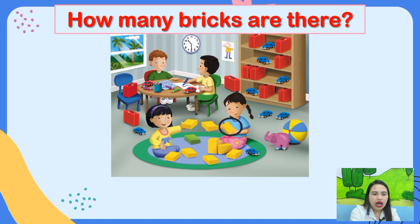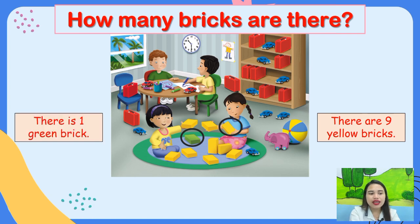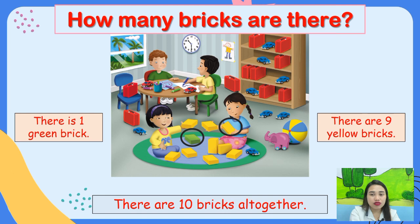How many bricks are there? How many yellow bricks? Let's count: 1, 2, 3, 4, 5, 6, 7, 8, 9 — there are nine yellow bricks. How about green bricks? There is one green brick. How many bricks are there altogether? There are ten bricks altogether. Good job.